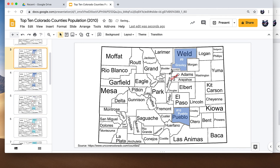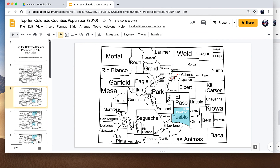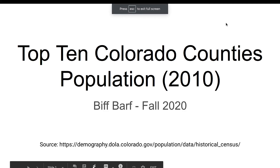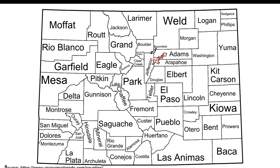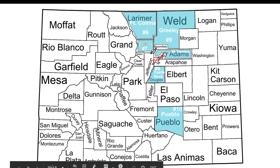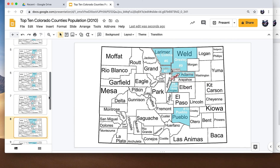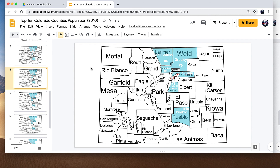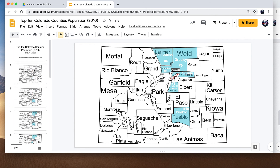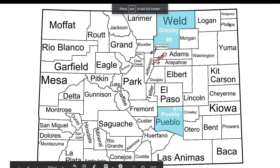Let me show you a final product that I did earlier. It begins with the title page, then a blank map slide. You can delete the source citation on subsequent pages — as long as it's on the first one we're fine. So I do Pueblo, hit the next slide and there's Weld, and you go through all these counties this way. That's what we want you to do — all the way down to the largest county in Colorado, El Paso. When you've got it all done, you should see all 10 counties on the final slide. What's nice about this is that the map does not move as you go through the slides.